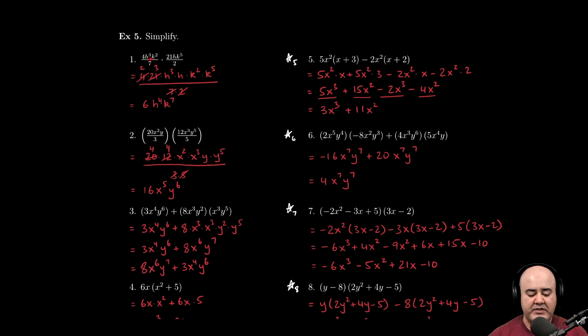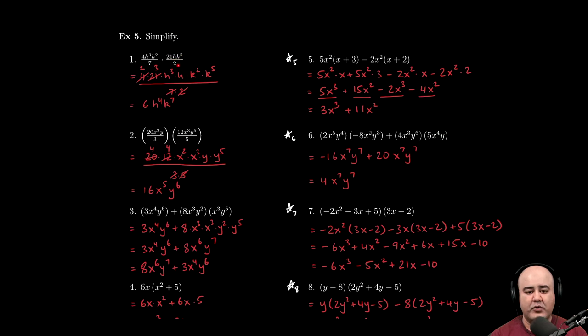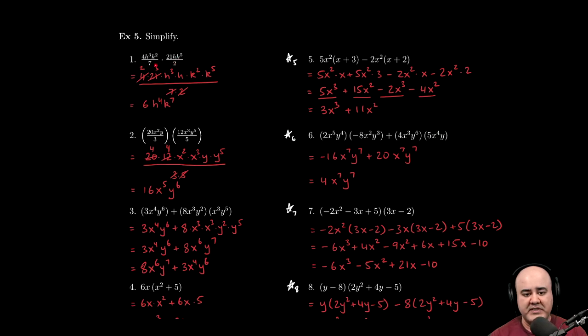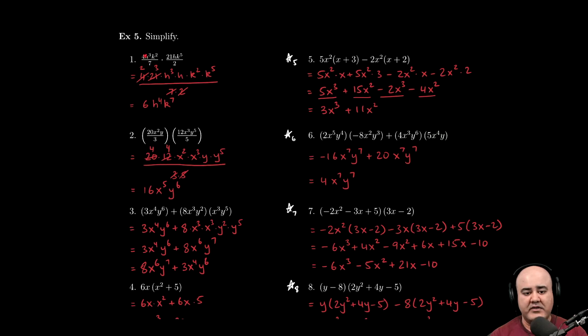So here we have 4h cubed k squared over 7 times 21h k to the 5th over 2. As long as we're multiplying two rational expressions or two fractions or two polynomials, we do the same thing we've done before. We can reduce anything on top with anything on the bottom. And whatever's left over is our answer.